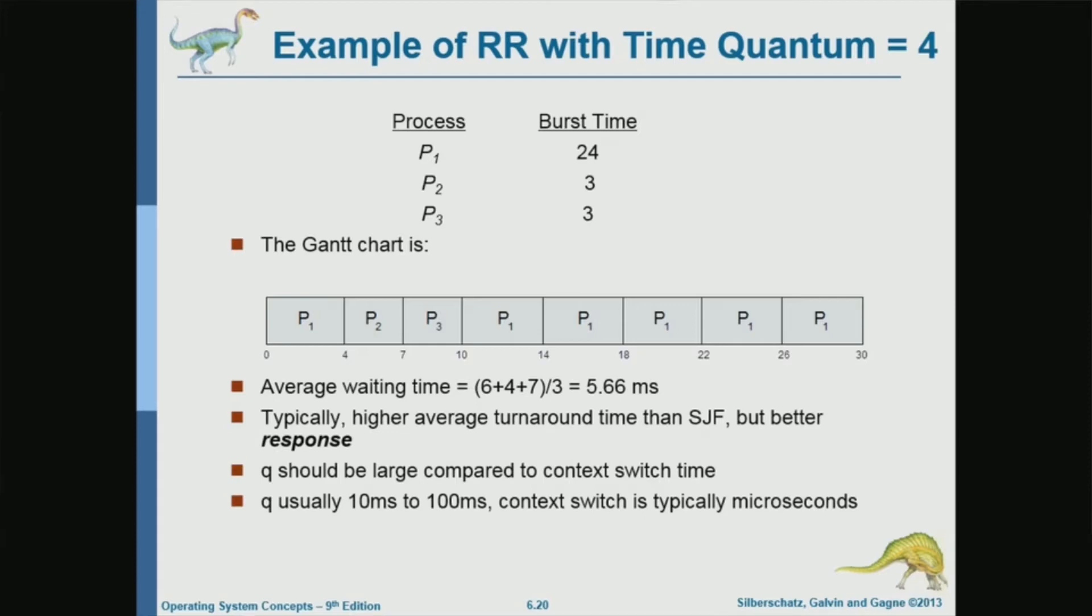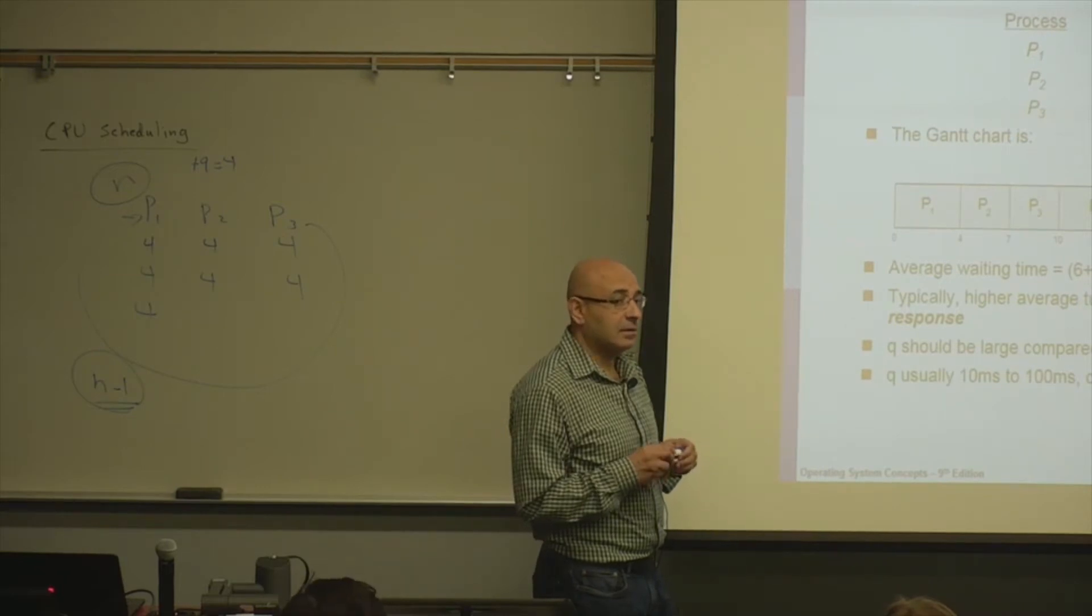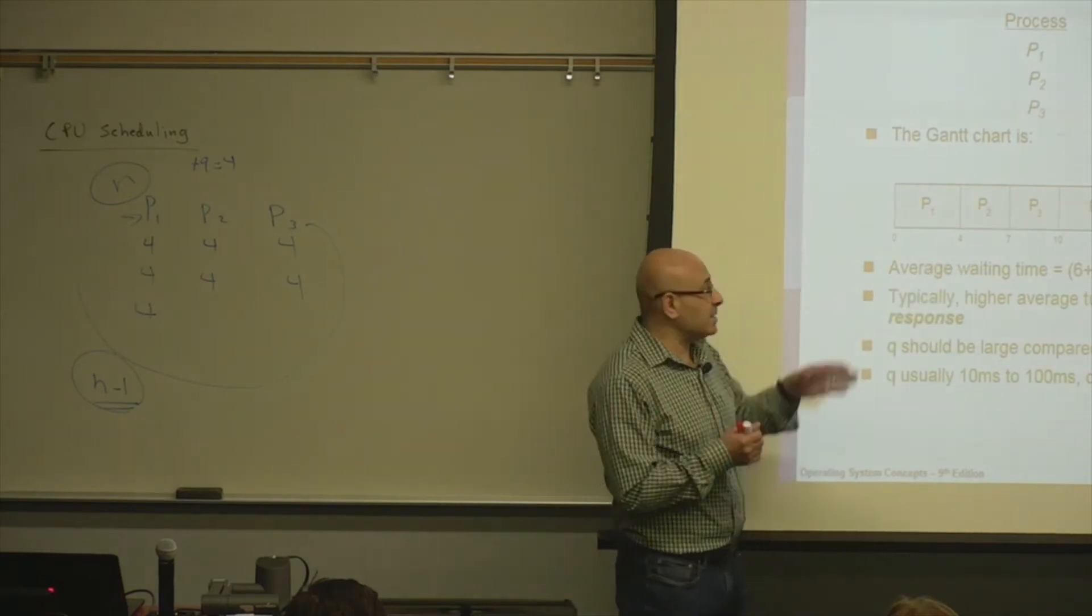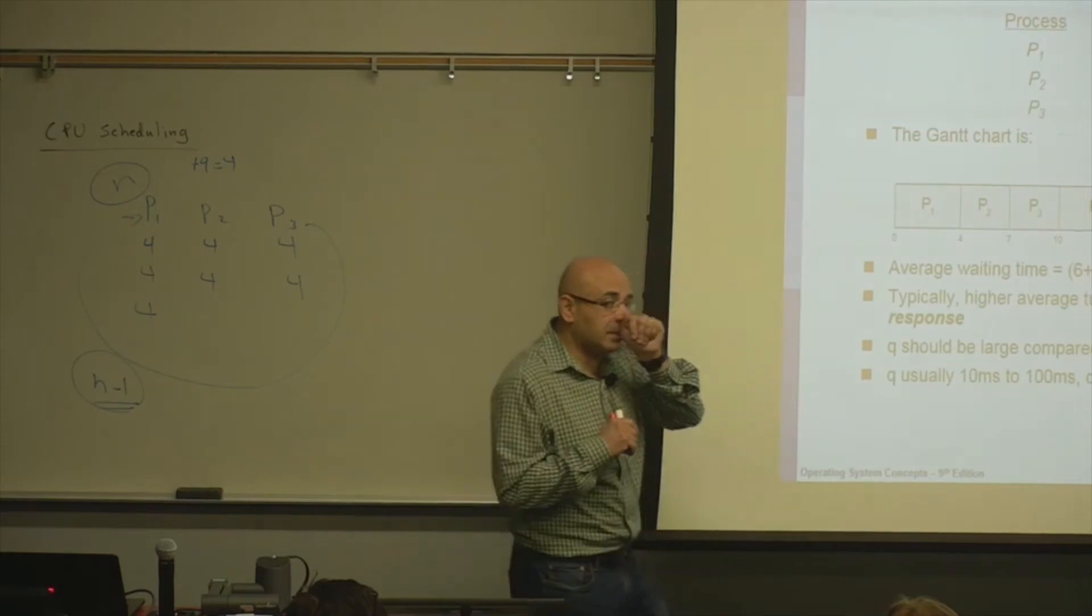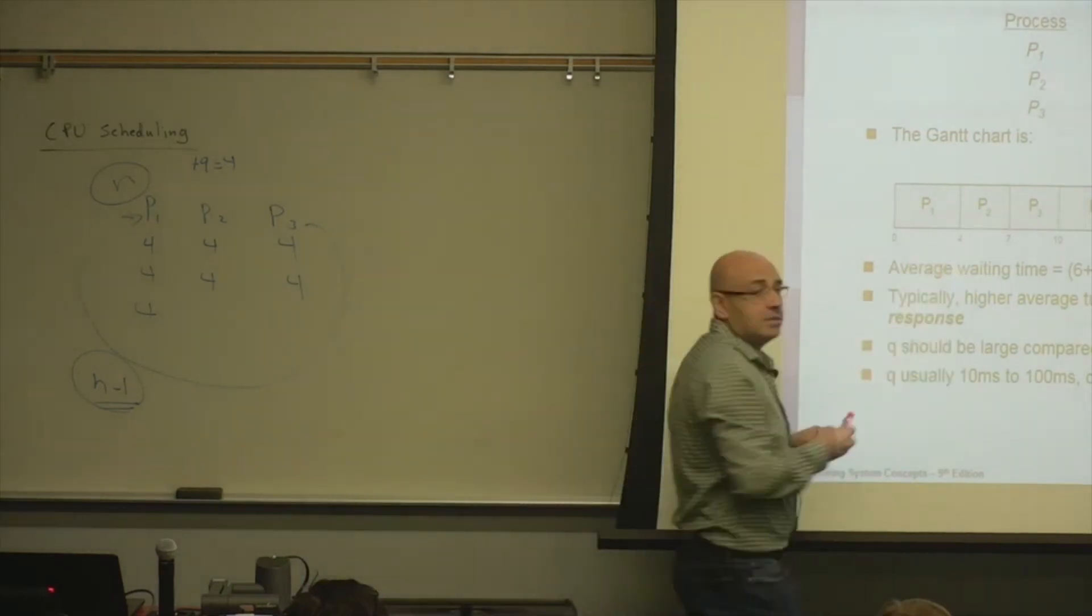Then we'll give four units to P2. But P2 is not going to use the four units, because the length of its CPU burst is three. So what will happen here in a real system? After three time units, what will happen? So how will the kernel get control again? Is it a time quantum interrupt? No, it's not a time quantum interrupt.